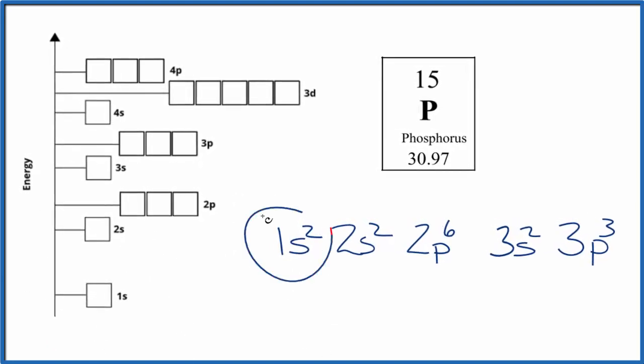So we have 1s2, we put 2 in there, opposite directions, 2s2, 2p6, 3s2, and then 3p3, and we spread them out before we pair them up. And this is the orbital diagram for phosphorus.